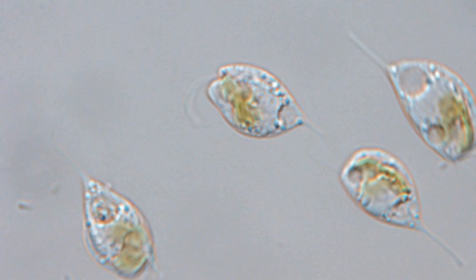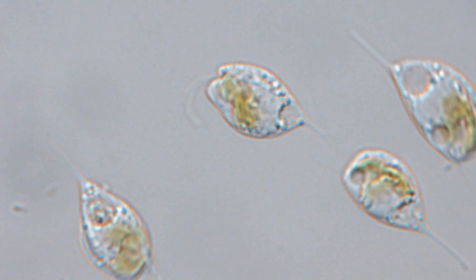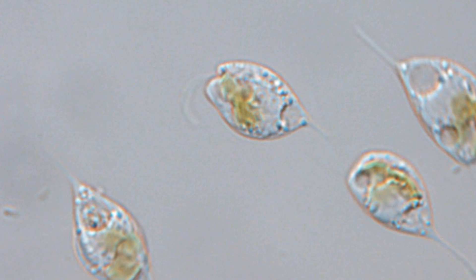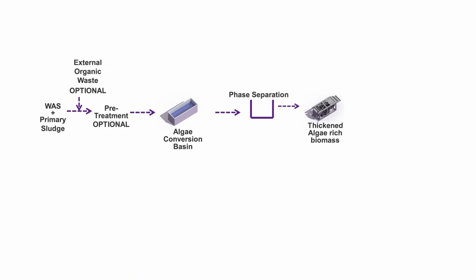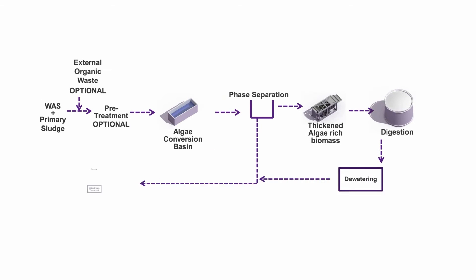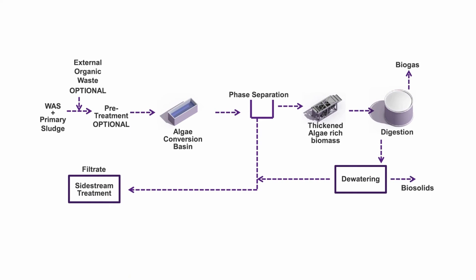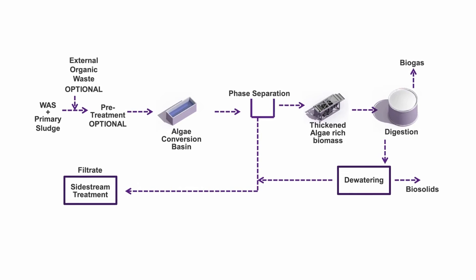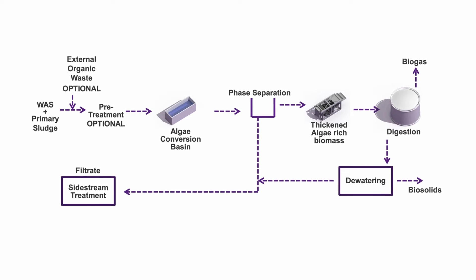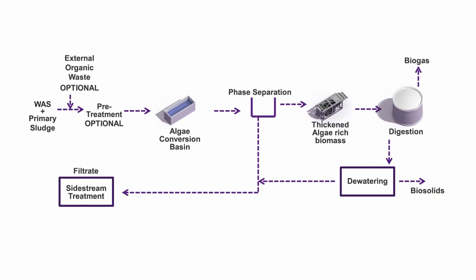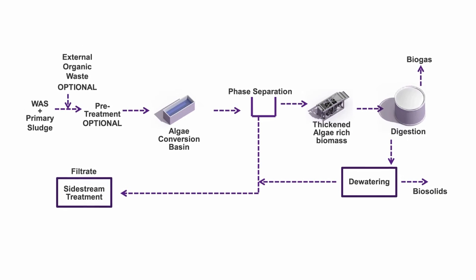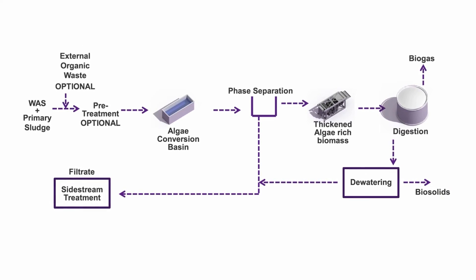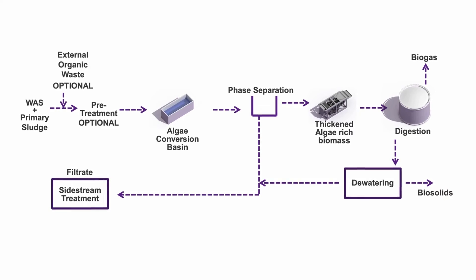OVIVO plans to pre-treat the waste activated sludge (WAS) with phagotrophic algae. The WAS may be combined with primary sludge or any external biodegradable waste, such as food-grade waste. Algae will feed off bacteria and particles, as well as dissolved organics.